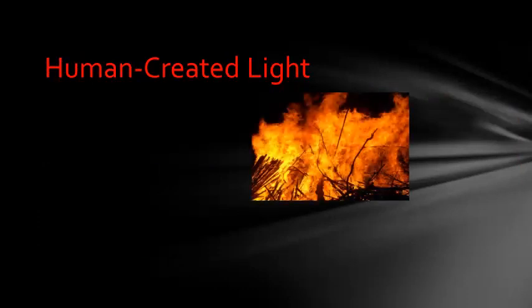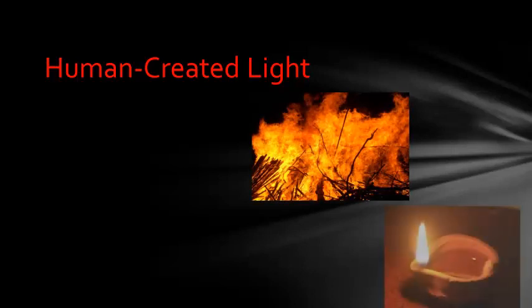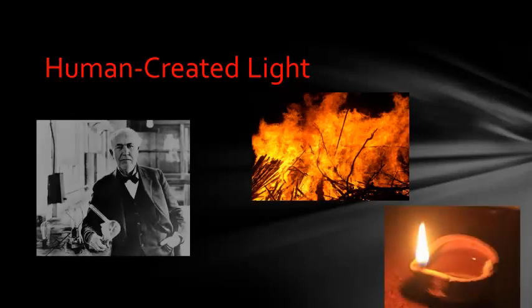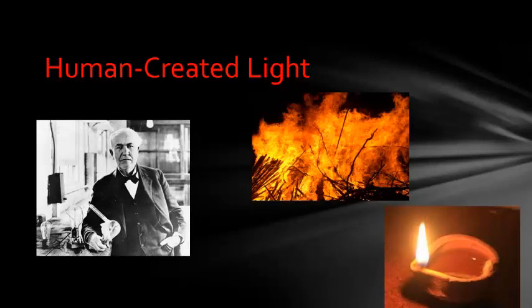If we only relied on natural light, we wouldn't be able to live our lives the way we currently do. The first types of human-made light were campfires and oil lamps. Then the light bulb was invented by Thomas Edison in 1879. He put an electric current through a thin wire, which heated up and glowed. And this was the first incandescent bulb.